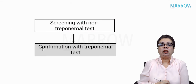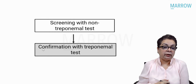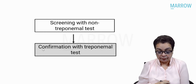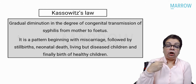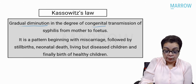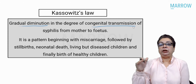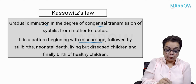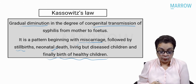For diagnosis of syphilis, we use a two-step approach: screening with a non-treponemal test like VDRL or RPR, and when reactive, confirmation with a treponemal test like TPHA or TPPA. The Kassowitz law states that in a female with untreated syphilis, there is gradual diminution of the degree of congenital transmission to the fetus — the pattern begins with miscarriage, then stillbirth, neonatal birth, living but diseased children, and finally healthy children.